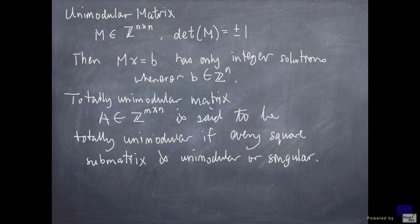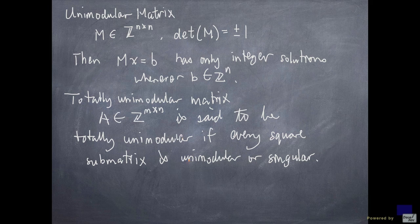So to check if a matrix is totally unimodular, you need to take every possible square submatrix. If it's non-singular, that means if it's invertible, then it has to be unimodular. In other words, the determinant is 1 or minus 1.